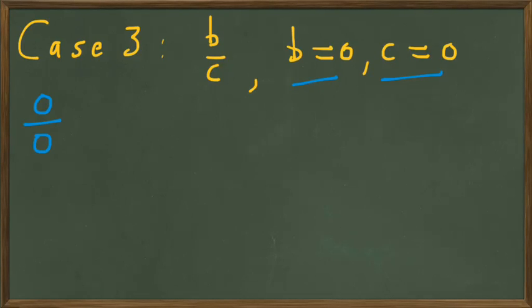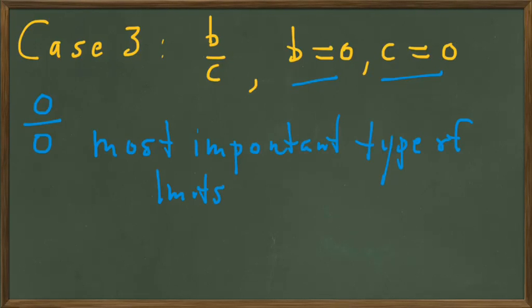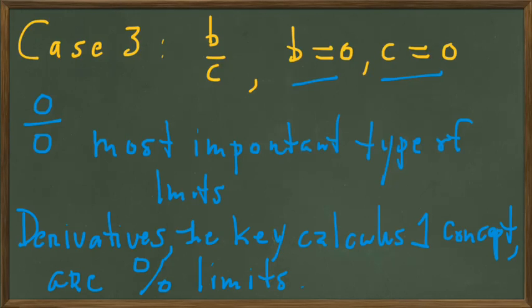We should note that we study 0 over 0 limits extensively in calculus because they are the most important type of limits. 0 over 0 limits are the most important type of limits because they form the building block of the key concept in calculus 1. So let's make a special note of that.